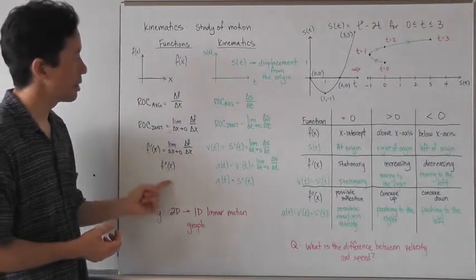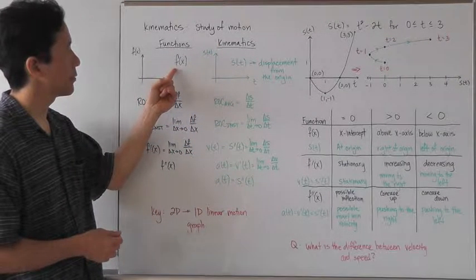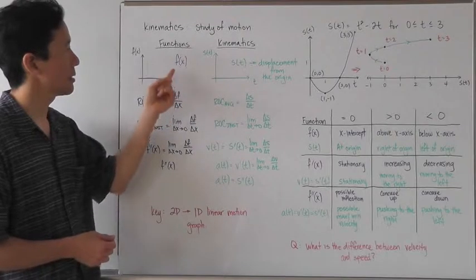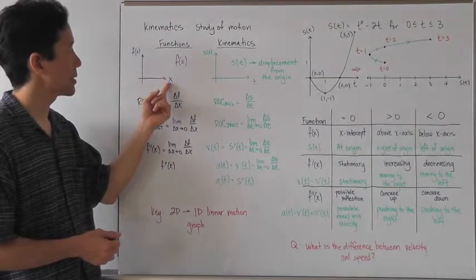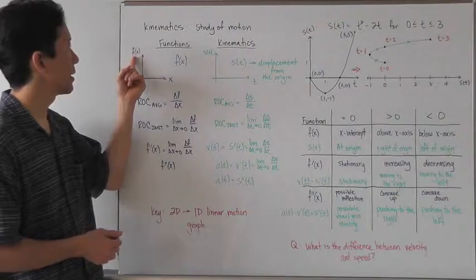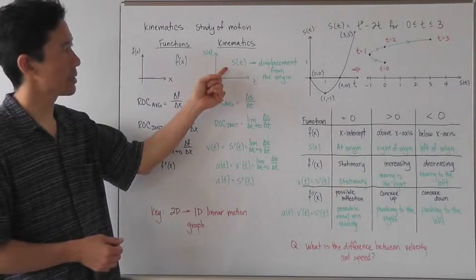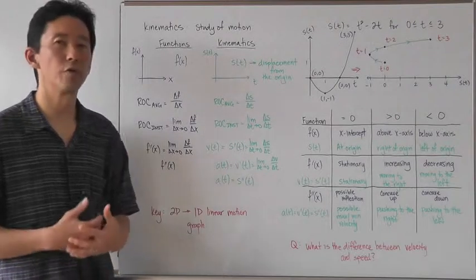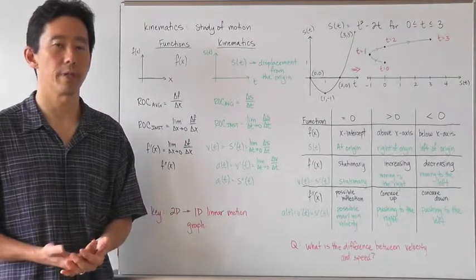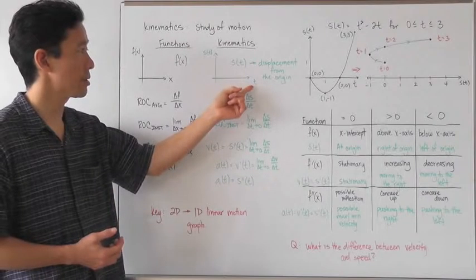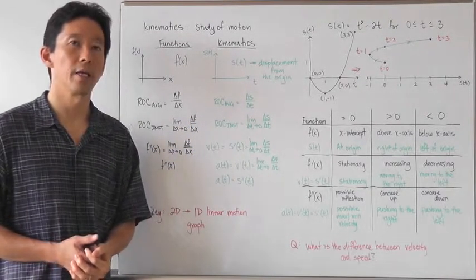Here's our functions column, and here's our kinematics column. Remember that when we dealt with functions, those y is a function of x — our horizontal axis was x, and our vertical axis was y. Now, in kinematics, we're dealing with movement, and movement is going to change depending upon a different parameter, which is going to be t — and t, of course, is going to be time.